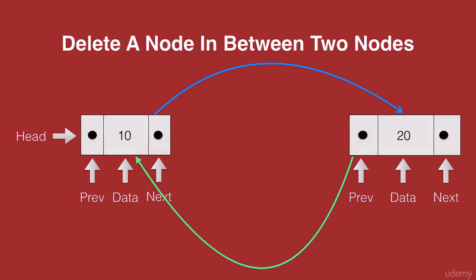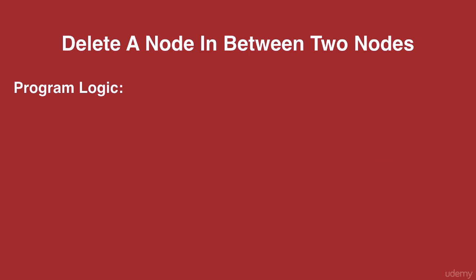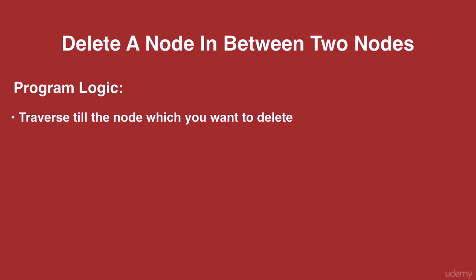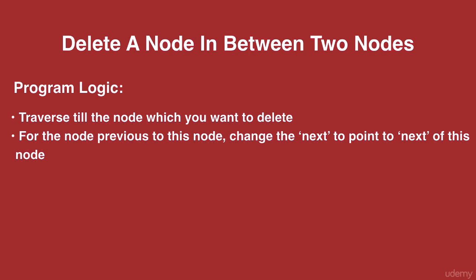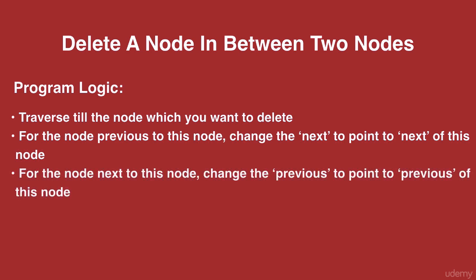Let's take a look at the program logic. We first need to traverse the list to the node which we wish to delete. Then, for the node previous to this node, we change its next pointer to point to the next of this node. And for the node next to this node, we change its previous pointer to point to the node previous to this node, and that completes the connection.